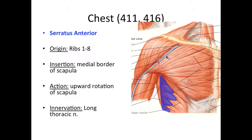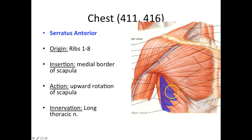Next we have serratus anterior — one of my favorite muscles. It originates from ribs one through eight, jumping up onto each rib, which gives it a serrated appearance like a serrated knife. Its insertion is the medial border of the scapula — it actually wraps around to go underneath the subscapular fossa to attach there. Based on that attachment, it allows upward rotation of the scapula. Innervation is branch of the brachial plexus.